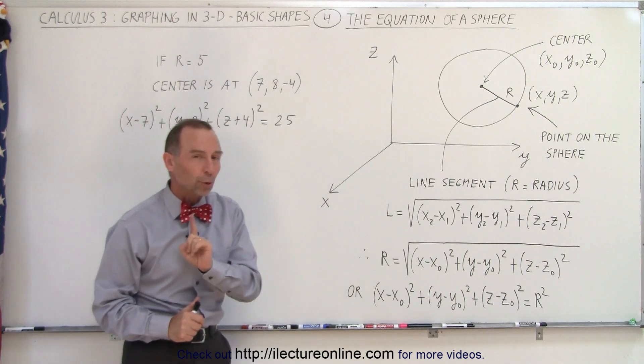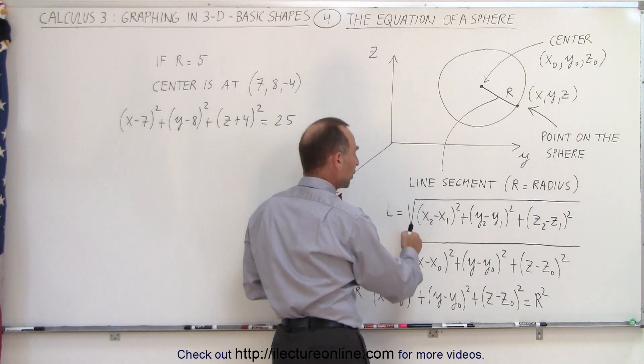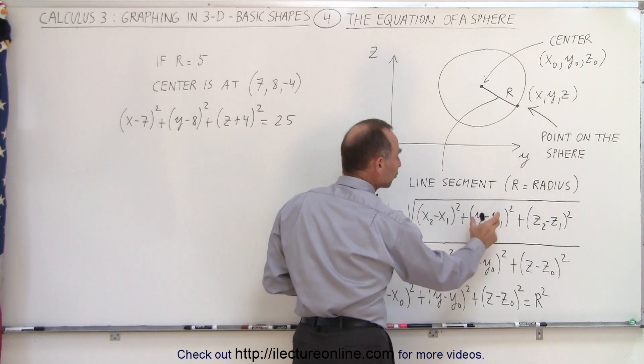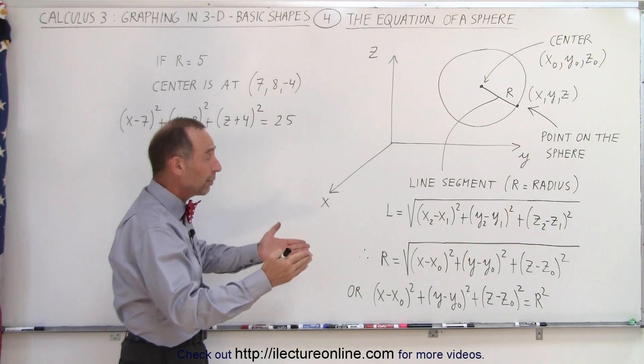Now, we know that the equation that we used before for a line segment is simply equal to the square root of the difference of the x, y, and z coordinates squared of each of the three directions.